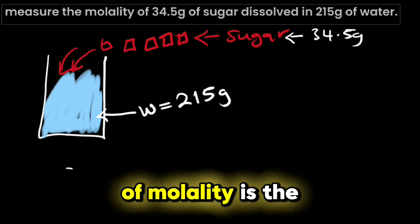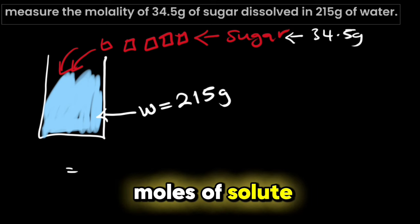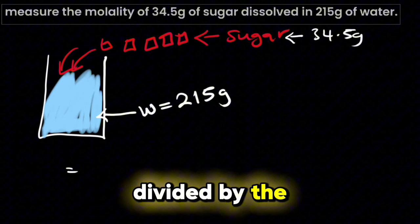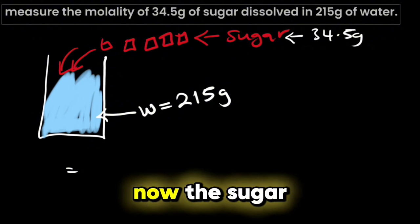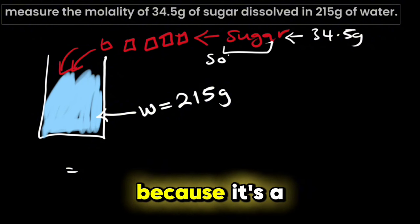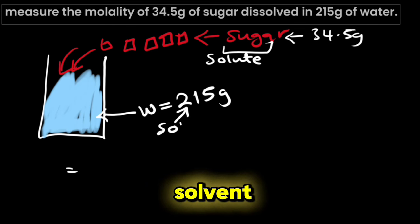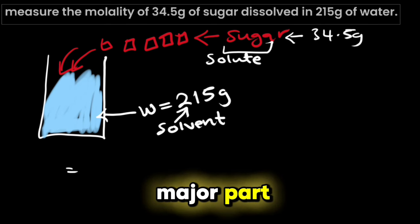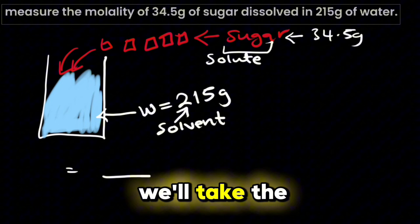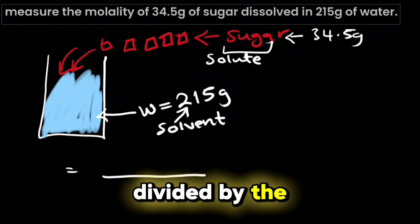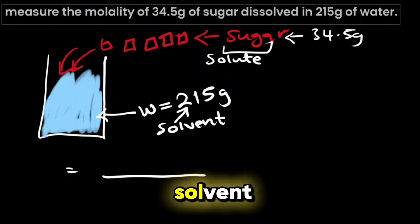Now we know that the formula for molality is the moles of solute divided by the kilograms of solvent. The sugar here is the solute because it's a smaller part and the water here is the solvent because it's the major part. So to get this we will take the moles of the solute divided by the kilograms of the solvent.